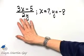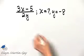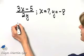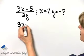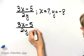Let's evaluate this expression given these replacement values. I'll write the expression down again: 3X minus 5 all over 2Y.